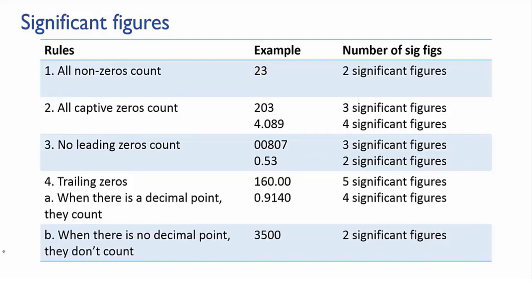Second, all captive zeros are significant. Captive means zeros that are between other non-zero digits. In 203 and in 4.089, the zeros are captive—they're between non-zero digits. Both they and the non-zero digits count. Hence, 203 has three significant figures, and 4.089 has four significant figures.